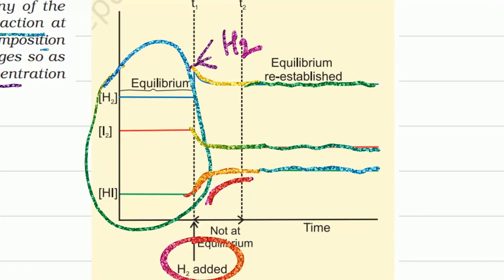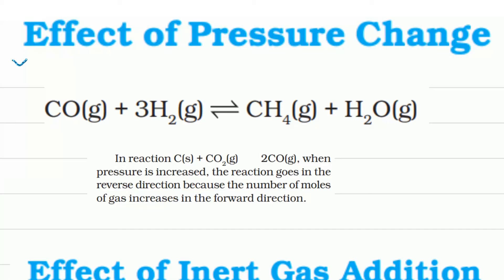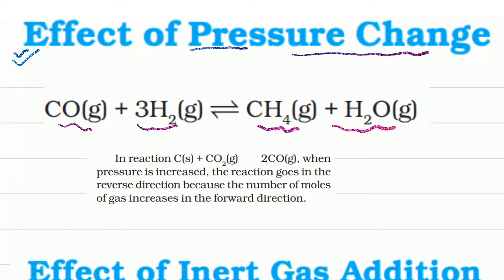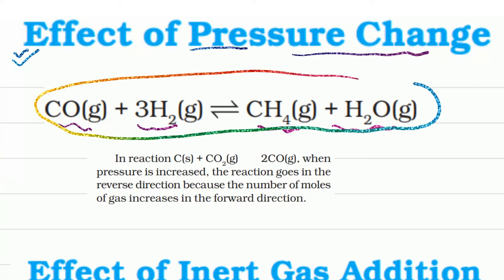When the effect is neutralized, the system attains the next equilibrium. Now let us discuss the effect of pressure change. We have an example where carbon monoxide and hydrogen react to form methane and water. To understand the effect of pressure change, we simply count the total number of gaseous reactants and products.